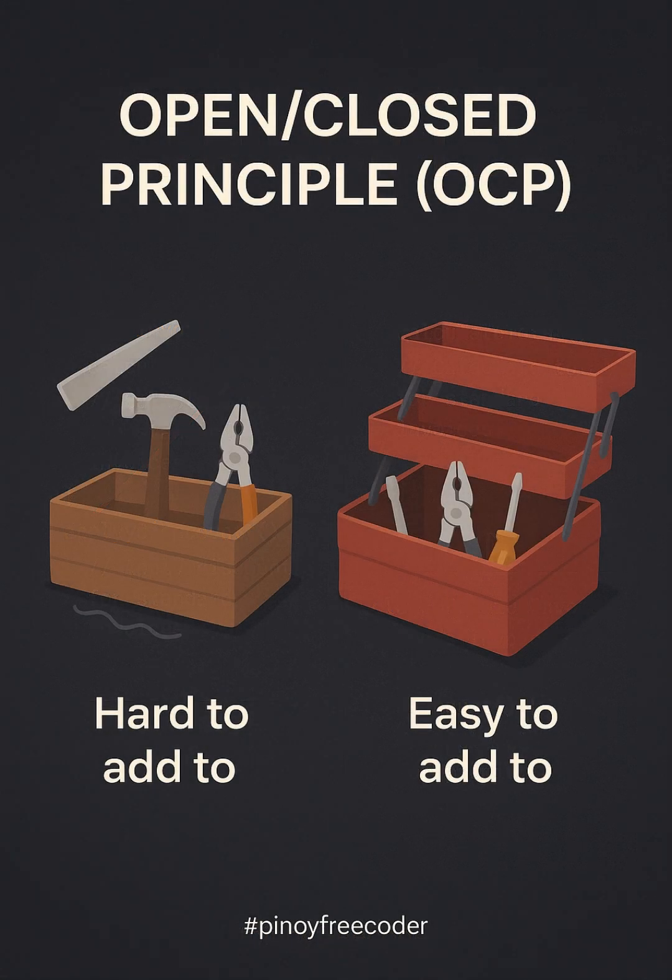Imagine you have a toolbox. On the left, you have a traditional toolbox where every time you want to add a new tool, you have to take apart the entire box and swap out some tools. This is like having to modify the original code whenever you want to add a new feature. It's messy and inefficient. Now, on the right, you have a smart toolbox with expandable compartments. Instead of taking apart everything, you simply add new tools to the extra compartments without touching the existing ones. This is like the Open or Closed Principle.